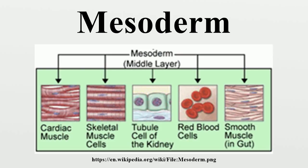The intermediate mesoderm connects the paraxial mesoderm with the lateral plate and differentiates into urogenital structures. In upper thoracic and cervical regions, this forms the nephrotomes, and in caudal regions this forms the nephrogenic cord. It also helps to develop the excretory units of the urinary system and the gonads.